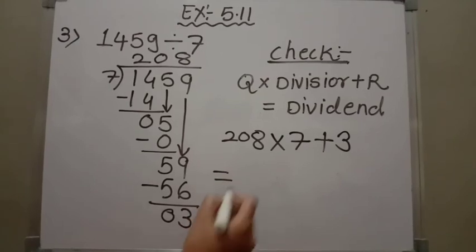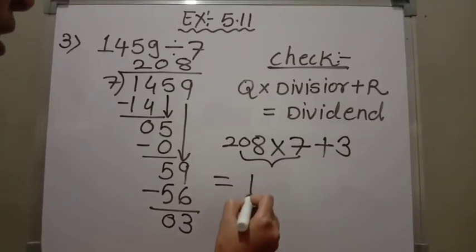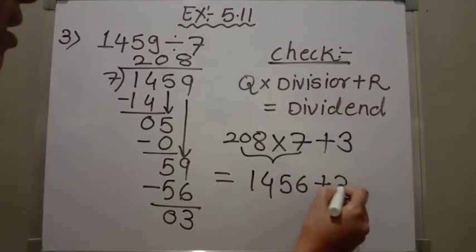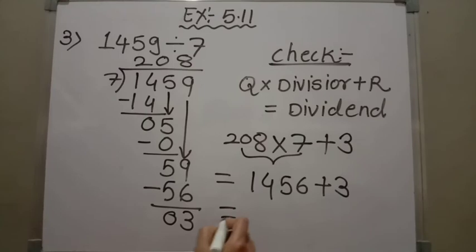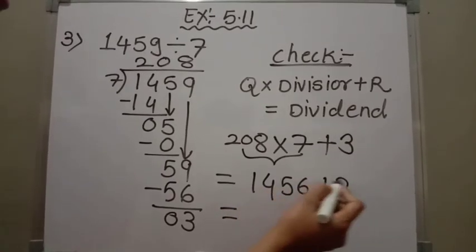Now let us solve. Children, when you multiply these 2 numbers you will get the product 1456 plus 3. Then we have to add these 2 numbers: 1456 plus 3.